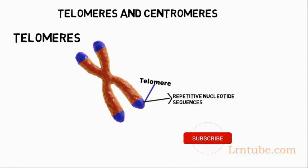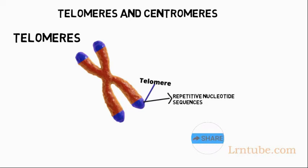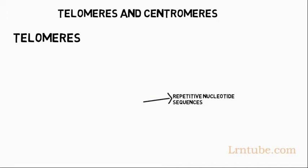DNA replication cannot extend all the way to the end of a chromosome. This will result in losing sequences and deformation with each round of replication. The solution for our cells is a simple repeating unit, which is TTAGGG.